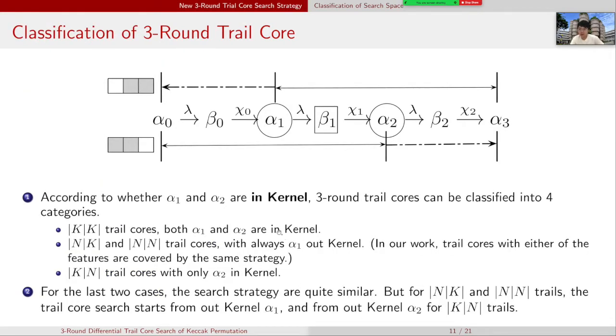As for the classification of three-round trail cores, according to whether α1 and α2 are in kernel or not, three-round trail cores can be classified into four categories: K|K trail cores with both α1 and α2 in kernel; N|K and N|N trail cores with always α1 out kernel.